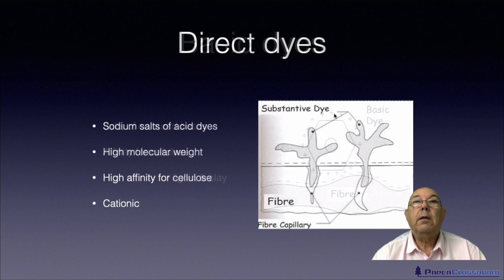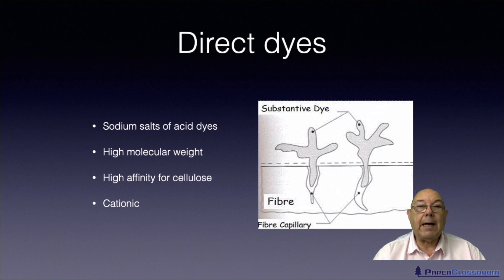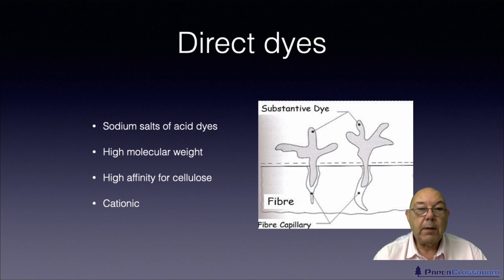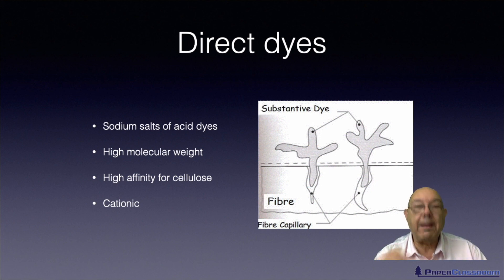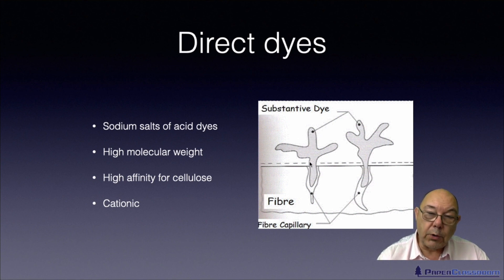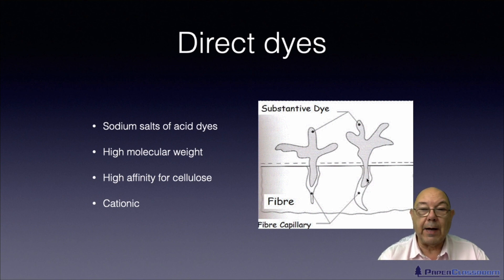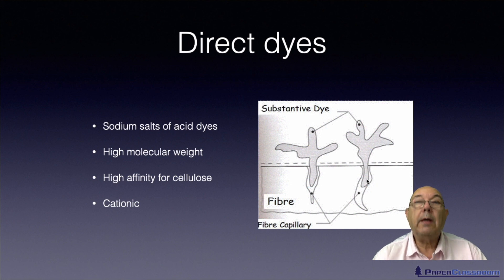That takes care of basic dyes. We now need to move on to the third category: direct dyes. Direct dyes are much bigger molecules than acid dyes and basic dyes. They are sodium salts of acid dyes and are a rather bigger molecule. They have an extremely high affinity for cellulose — so much so that these big molecules can wedge themselves within the pore of the cellulose fibre and hold each other there. And they too are also cationic.